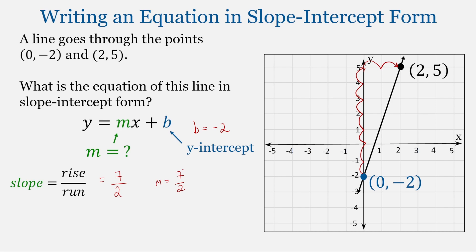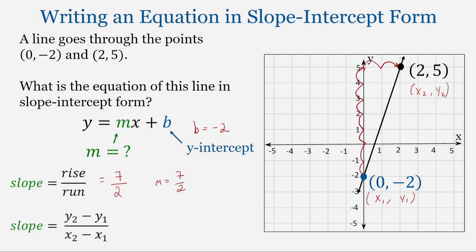But we needed a graph to do this. How do we find the slope without a graph? Well, the slope is also the rate of change of the line — the change in y-values, which is what we calculated when we found the rise, over the change in x-values, which is the run. It doesn't matter which is point 1 and which is point 2. So y₂ minus y₁ is 5 minus (-2), all over 2 minus 0. This is 5 plus 2, all over 2. Again, we get a slope of 7/2.